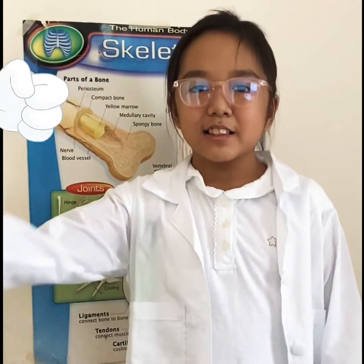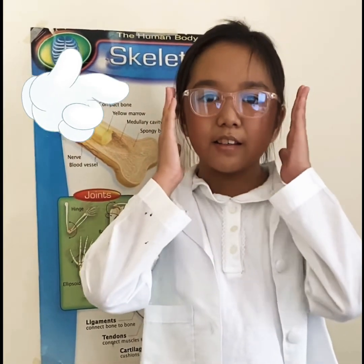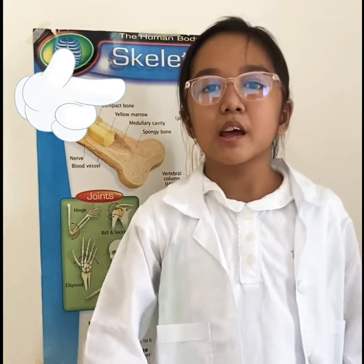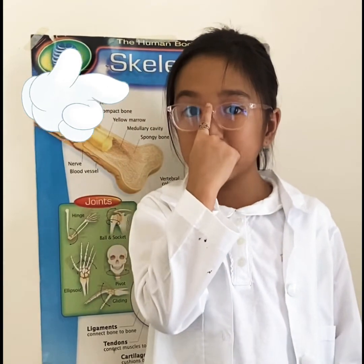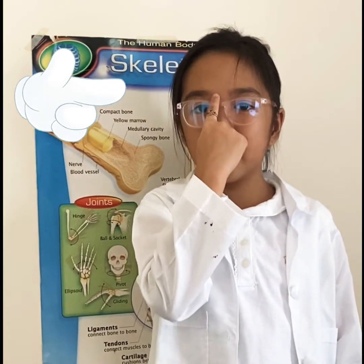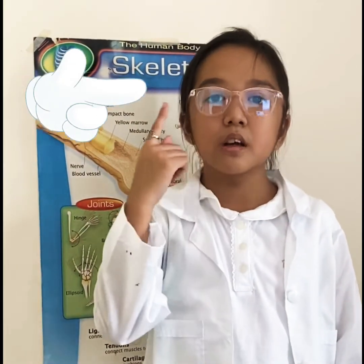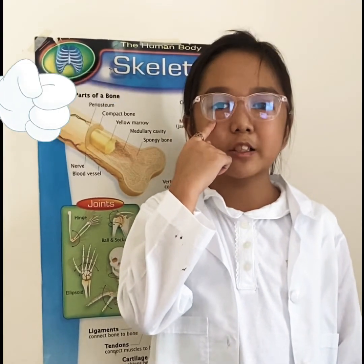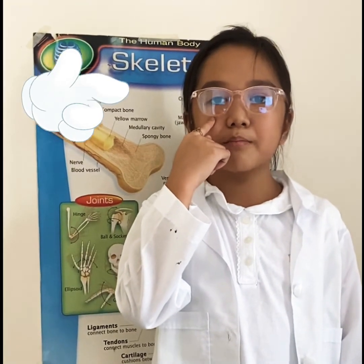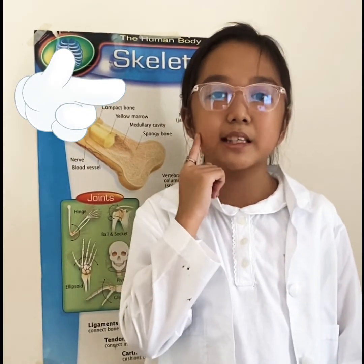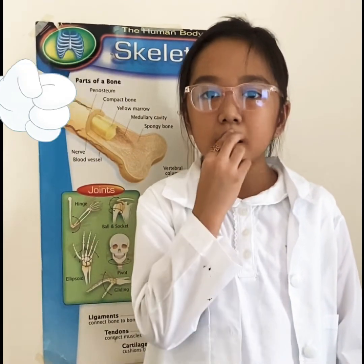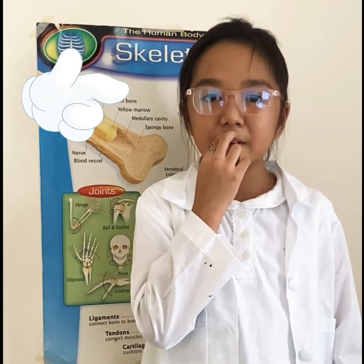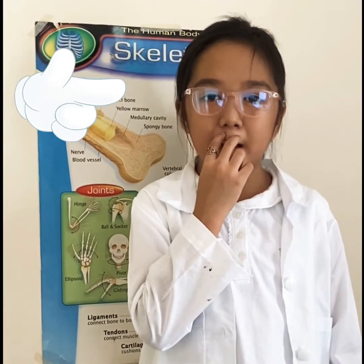Let's start with the bones in our head. In our forehead, it's called the frontal bone. On top of our nose, it's called the nasal bone. At the bottom of our eyes, it's called the temporal bone. And in our cheek, it's called the zygomatic bone. At the bottom of our nose, it's called the maxilla.